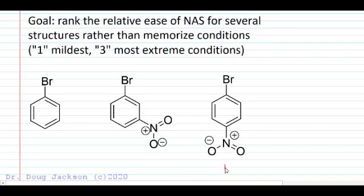The easiest, the mildest, would be the para-substituted, followed by the meta-substituted, which isn't given the benefit of sigma and pi withdrawing - only sigma withdrawing. The most extreme would be just bromobenzene with no other activating groups. That's how we would rank those out. That's the kind of expectations I have as far as reaction conditions, and to be able to predict the products of nucleophilic aromatic substitution.